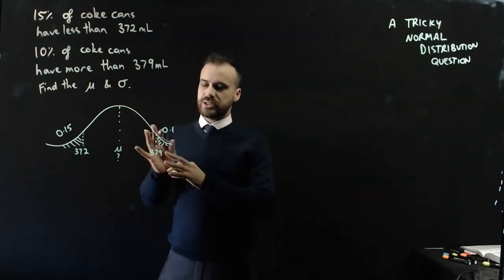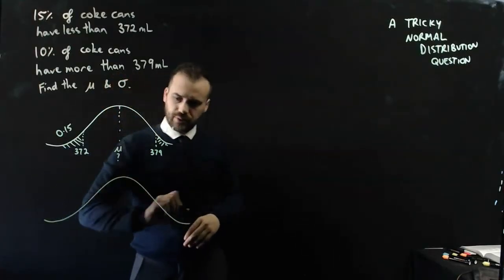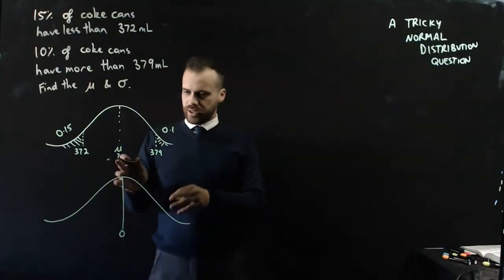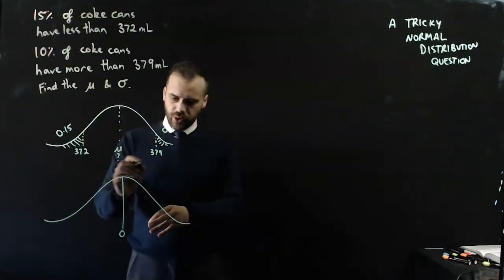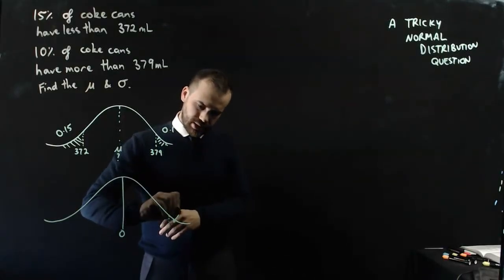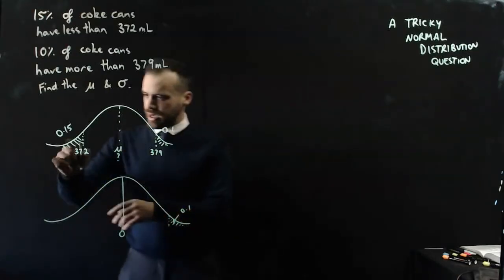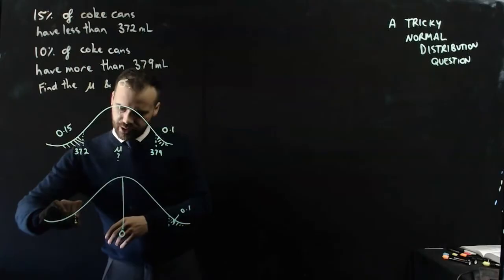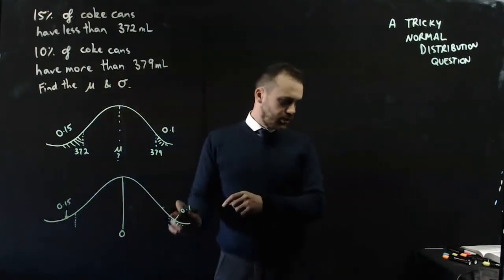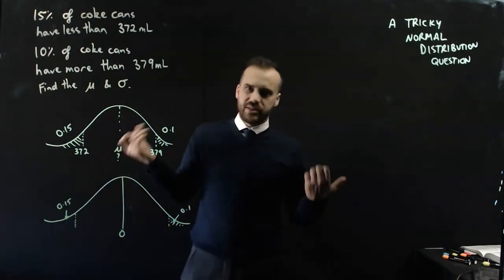Let's think about what our standard normal distribution is. Our standard normal distribution has a mean of 0. What I can do is put in this thing here and just make that area 0.1 and put in another value here and make that area 0.15. I'm going to call these two values here Z1 and Z2.